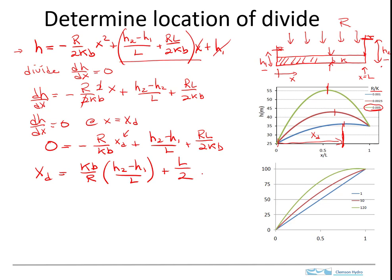What we can see is that it depends on the ratio of R and K, depends on the heads on either side or on the streams, and depends on the distance. So that all makes sense.